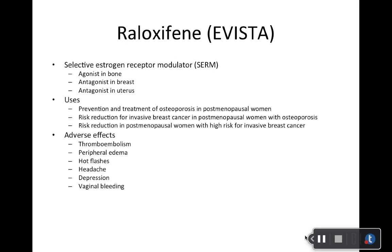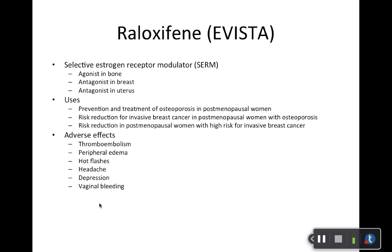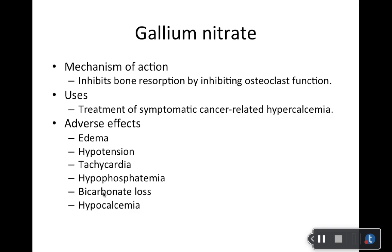Next, raloxifene — brand name Evista. This is a SERM — Selective Estrogen Receptor Modulator — which serves as both its classification and mechanism of action. Uses: osteoporosis, and risk reduction for invasive breast cancer in postmenopausal women at high risk. Adverse effects: relatively better tolerated than estrogen, but does have some issues with thromboembolism and some adverse effects you'd expect with an estrogen receptor modulator.